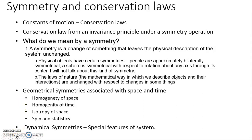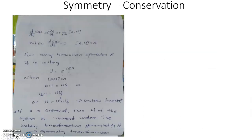We have seen that any conservation law arises from the invariance of the Hamiltonian of a system under a symmetry transformation. We will now prove this mathematically.